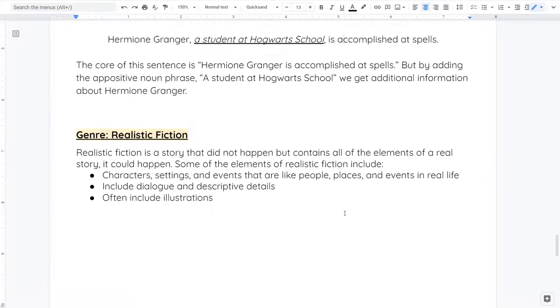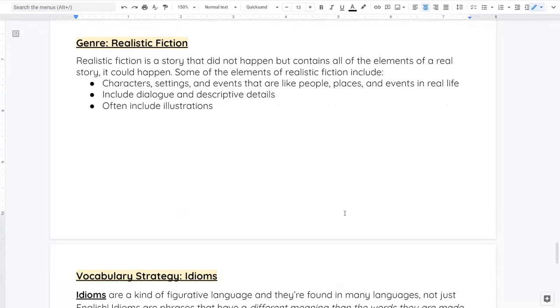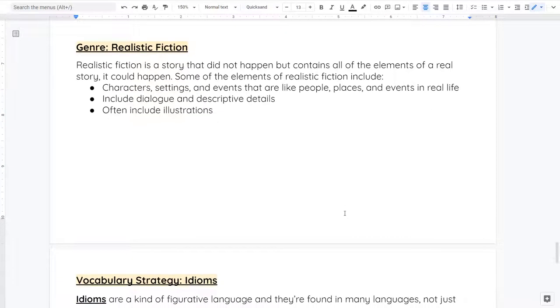Let's move on and discuss your genre for this week. Your genre is realistic fiction. Realistic fiction is a story that didn't happen, but it contains all of the elements of a story that could happen. This is the same genre that we talked about last week. Some of the elements include character settings and events that are like real people, places and events. They can include dialogue and descriptive details. And a lot of times they'll include illustrations.